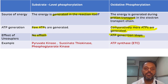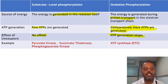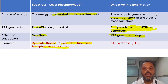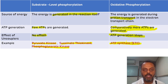Examples of substrate level phosphorylation — you have to remember these three: succinate thiokinase, pyruvate kinase, and phosphoglycerate kinase. Pyruvate kinase and phosphoglycerate kinase are related to glycolysis, while succinate thiokinase is related to the TCA cycle. The example of oxidative phosphorylation is ATP synthase, that is Complex 5 of the electron transport chain. That is all about substrate level phosphorylation and oxidative phosphorylation. Thank you.